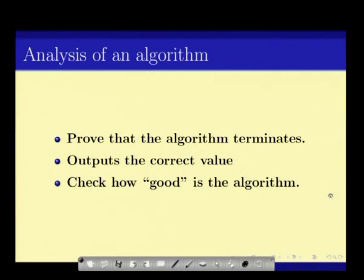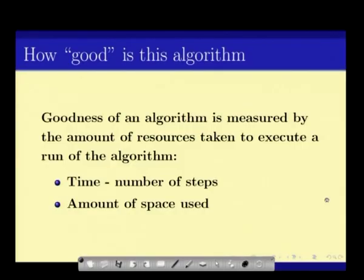When we compare algorithms, we need to understand which is better, and for that we measure how good an algorithm is by the amount of resources it uses. In this lecture series, we have looked at two particular resources: time and space. Time refers to the number of steps made by the algorithm, and space refers to the amount of memory required by the algorithm.